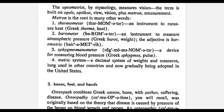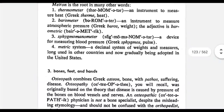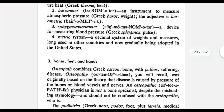Based on the root metron, meaning measurement, are the following words. First is thermometer, from the root therm, meaning heat, plus metro, meaning measurement — so it is an instrument to measure heat. The next word is barometer, which has the roots baros, meaning weight, plus meter.